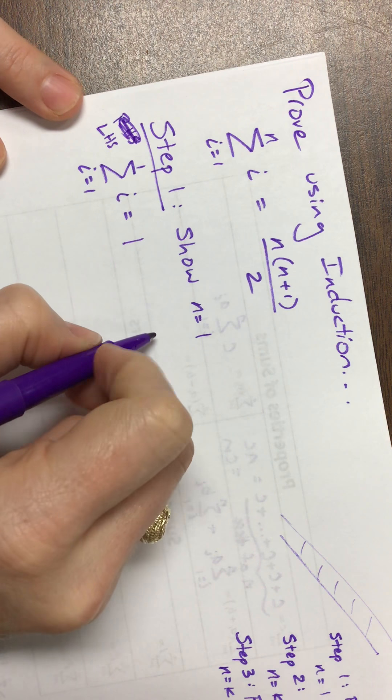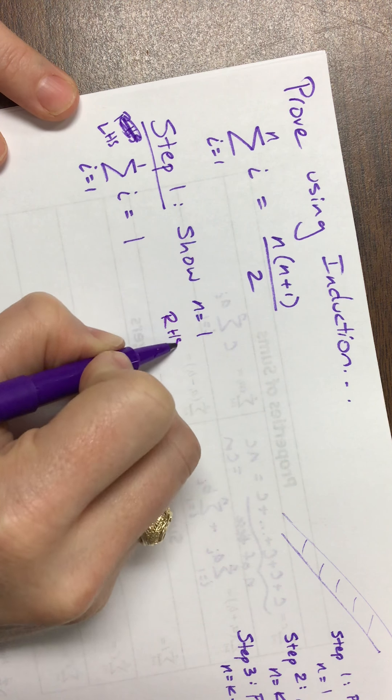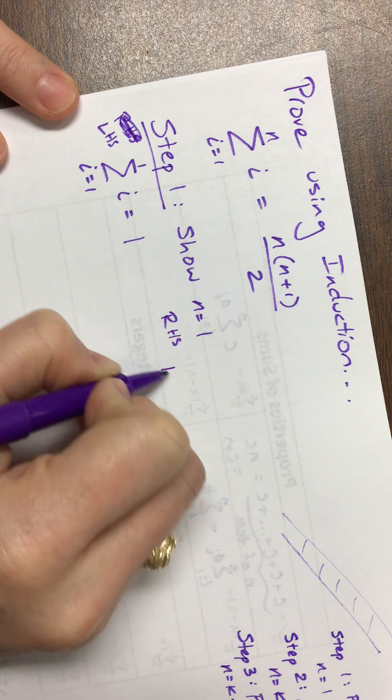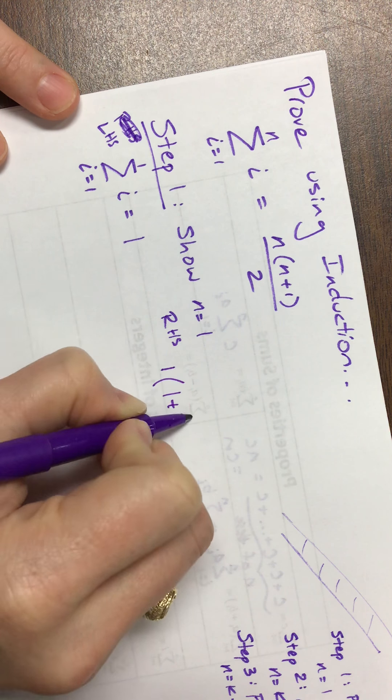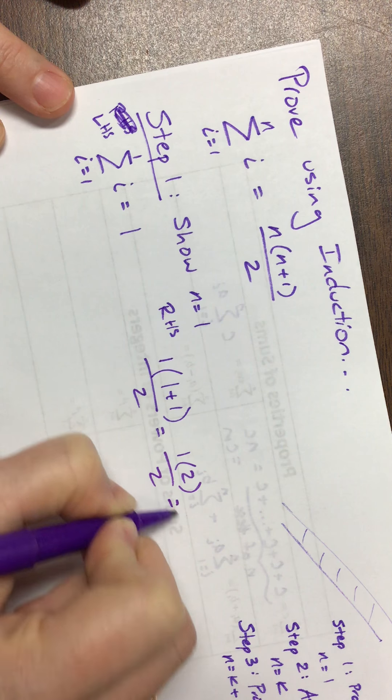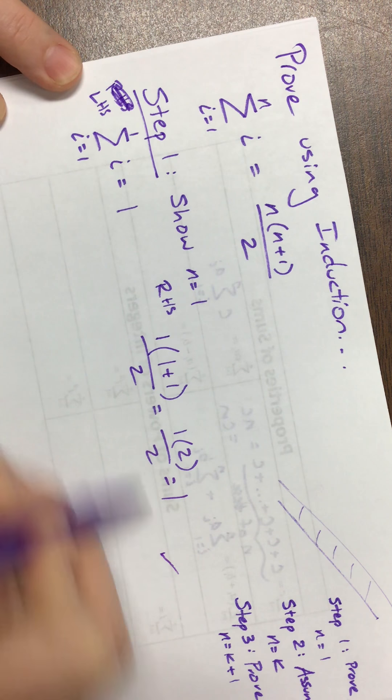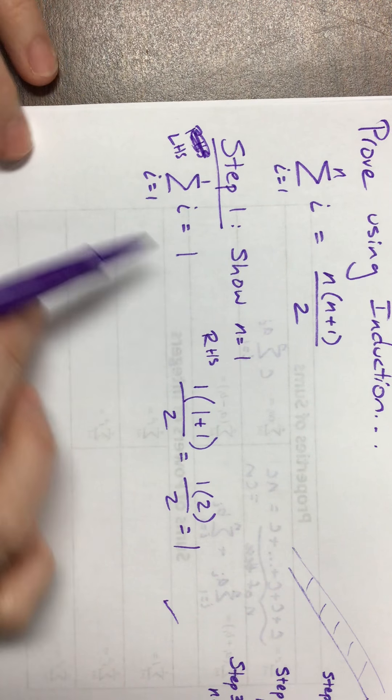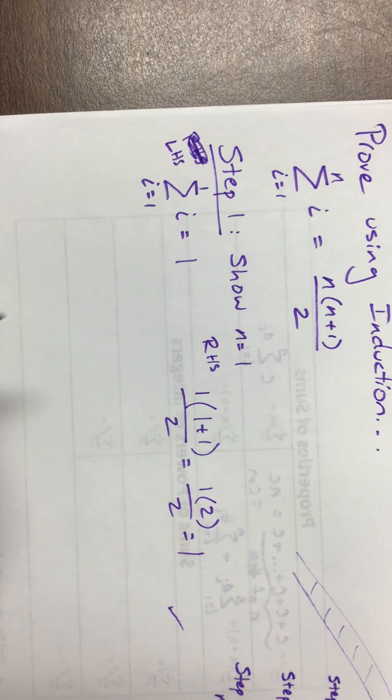We're done. Then the other side here, so then the right-hand side is to say that n equals 1, 1 times 1 plus 1 over 2, this is 1 times 2 over 2, that's equal to 1. They match. The left-hand side and the right-hand side match up. We have shown that when n equals 1, it's true.